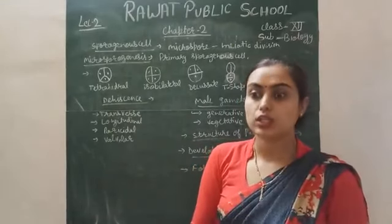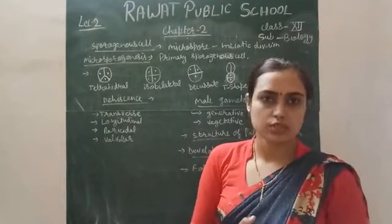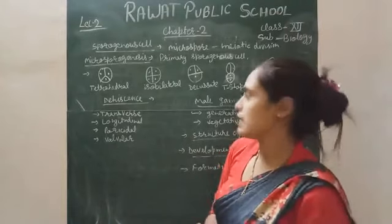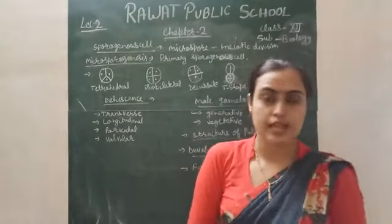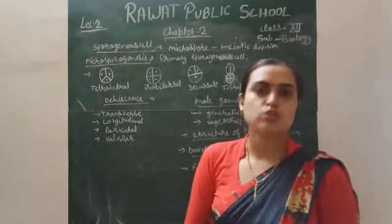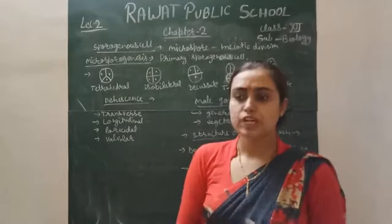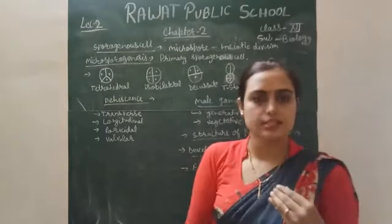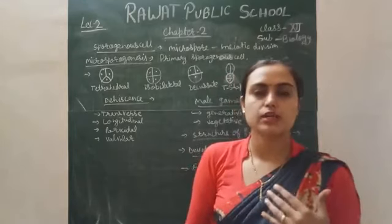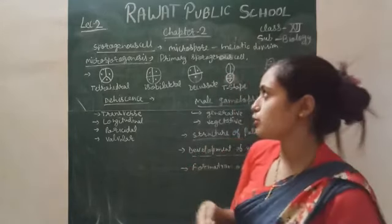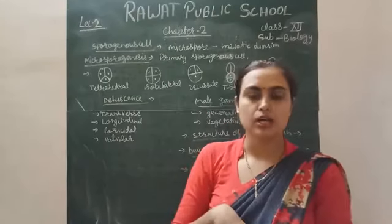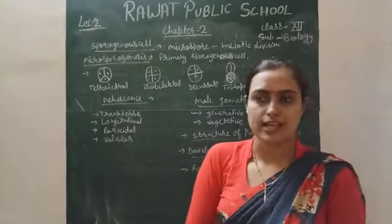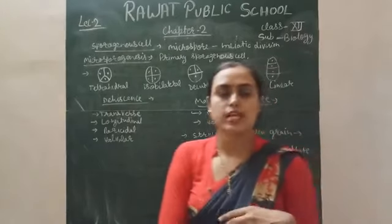Yesterday we had discussed about the tapetum which is made up of the sporogenous cell and which is formed by the archesporial cell. The sporogenous cells are surrounded by the tapetum, and out of these sporogenous cells, a few cells start to increase their size.